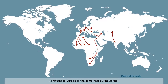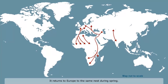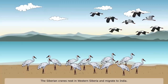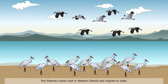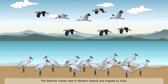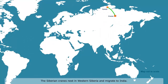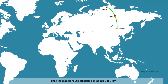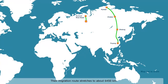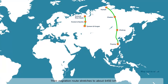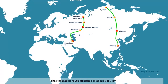The European stork returns to Europe to the same nest during spring. The Siberian cranes nest in Western Siberia and migrate to India. Their migration route stretches to about 6,450 km.